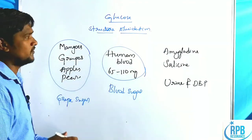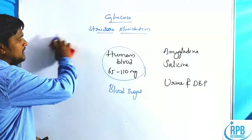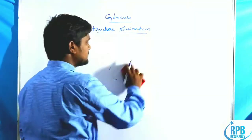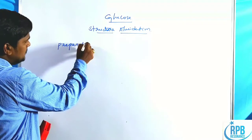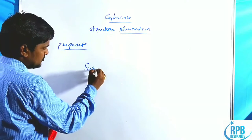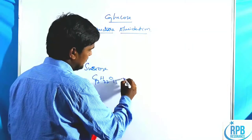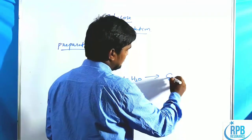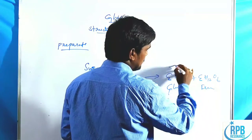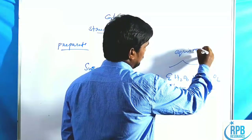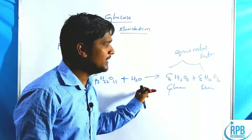Naturally, glucose is prepared through cane sugar hydrolysis and starch hydrolysis. The first preparation method is hydrolysis of sucrose (C12H22O11), which gives C6H12O6 + C6H12O6 — one is glucose and the other is fructose, both available in equimolar ratios (50-50%).